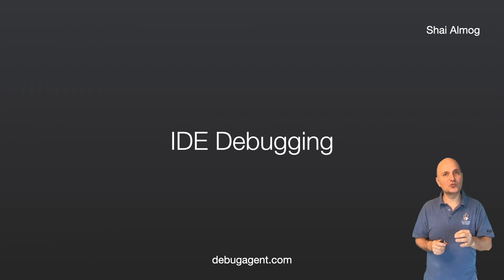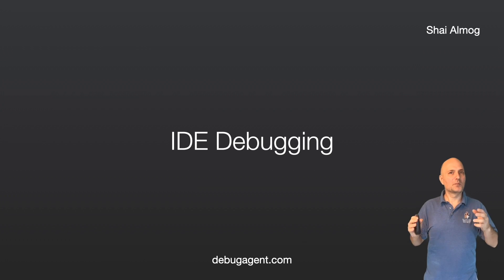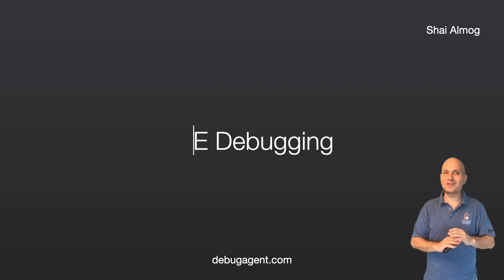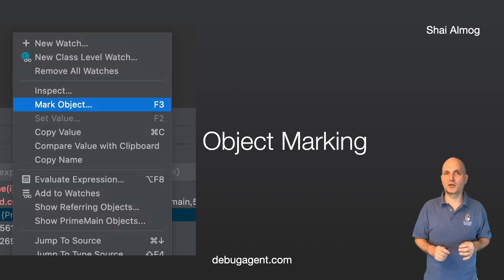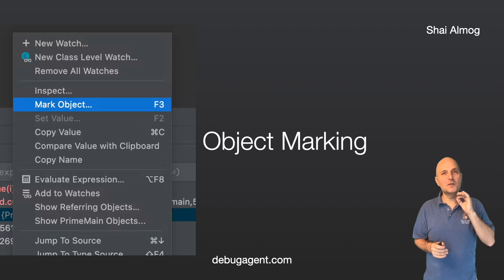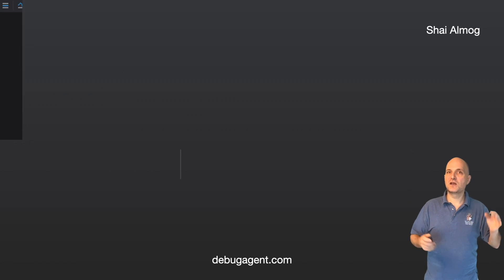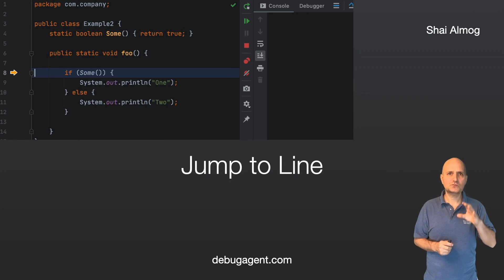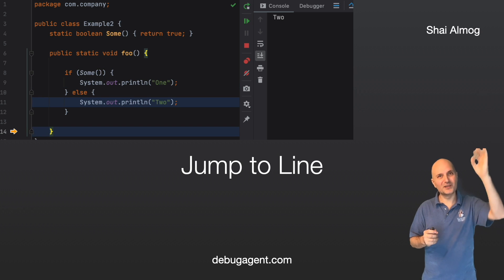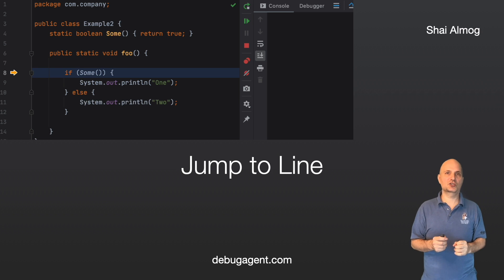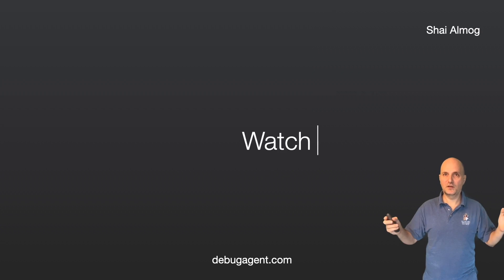That's why I chose to start the course with IDE debugging — it's something we use all the time. But as I go through these videos, I guarantee I will cover features that you probably never heard about. One such feature is object marking, which lets us define a global static variable as we debug. It's an amazing feature which we discuss in the third video in this course. Another feature is jump to line, which lets us move the execution point dynamically to an arbitrary location. We will discuss it in the second video in this course.